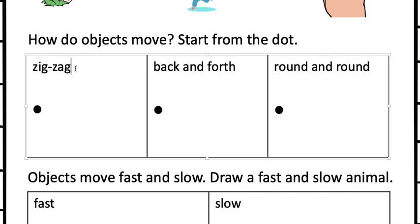So in this one it says zigzag. So start from this dot and draw a zigzag line with your pencil. Here it says objects move back and forth. What does that mean? Start from this line and draw a line that's back and forth. Round and round. So draw a line starting here that goes around.